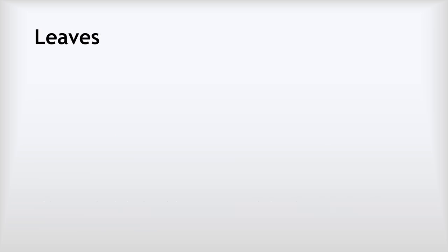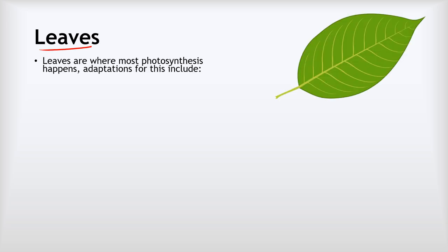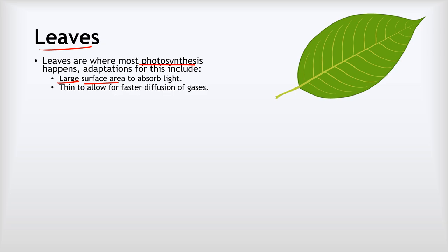Leaves are super important to plants because they are where most photosynthesis happens, and so they have lots of adaptations to maximize the rate of photosynthesis. First, they have a large surface area to absorb as much light as possible. Second, they are thin, allowing faster diffusion of gases in and out — what we call gas exchange. Third, they are made of cells containing many chloroplasts. Not all plant cells contain chloroplasts — root cells don't, since there's no light underground — but leaf cells are jam-packed with them.